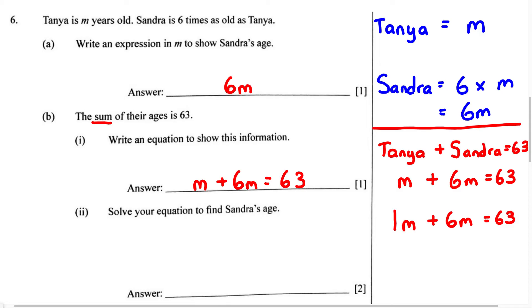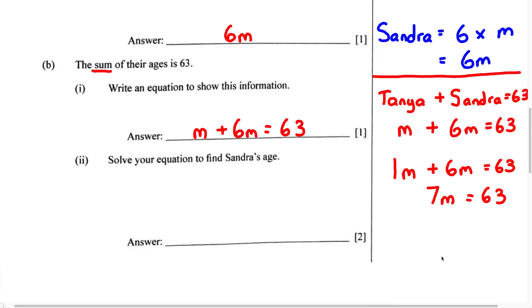Now we know we're just going to add these because they're like terms. When we add, we just add the coefficients and keep the variable. 1 plus 6 is going to give us 7, so we end up with 7M equals 63. Now we want to solve for the variable M. To find M, we're going to have to divide both sides by 7. When we divide both sides by 7, this will cancel. Therefore, M equals 63 divided by 7, which gives us 9.